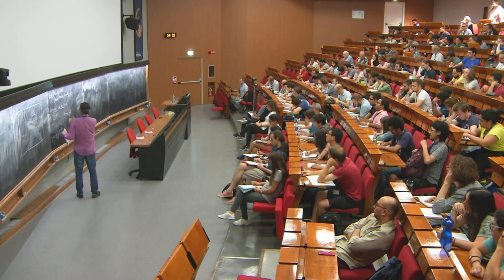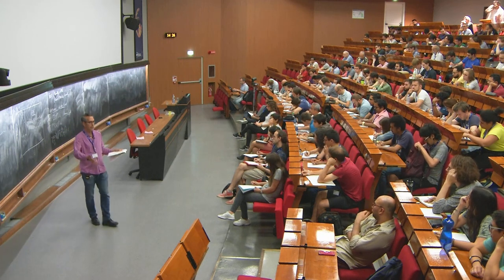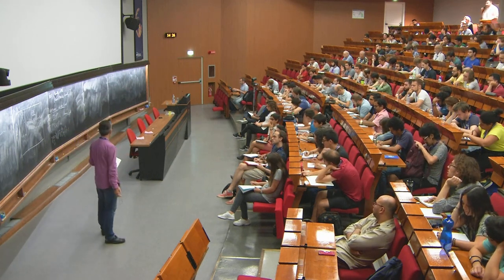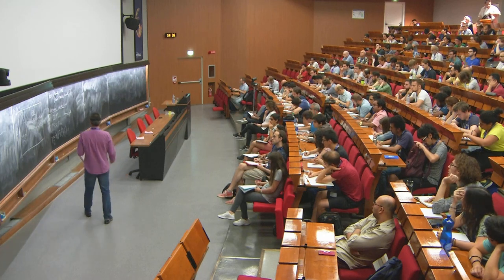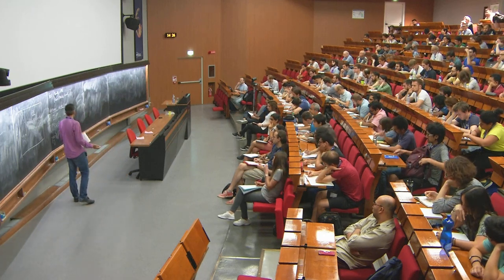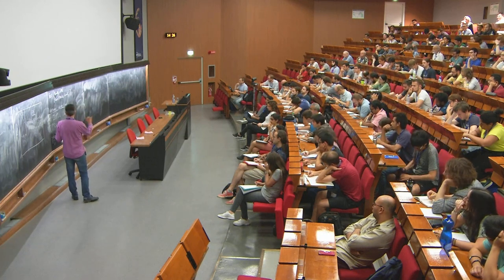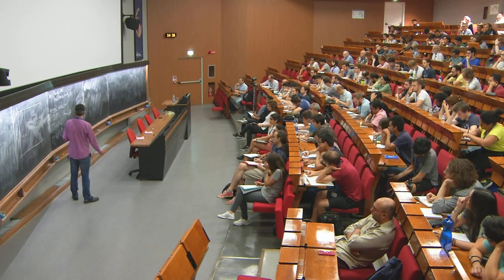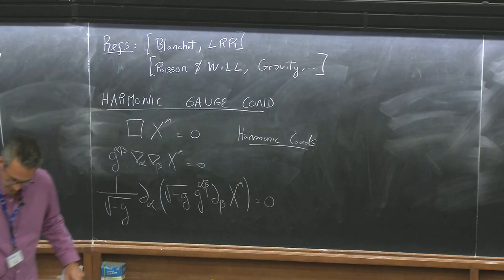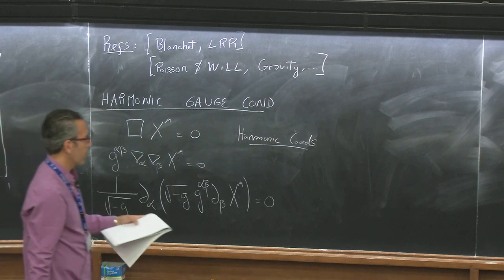This should work in principle for any set of coordinates that you choose — any x-mu that satisfies that set of equations will be harmonic. However, it is customary in post-Newtonian theory to employ Cartesian coordinates — t, x, y, z — for which this derivative acting on x-mu turns into a Kronecker delta.